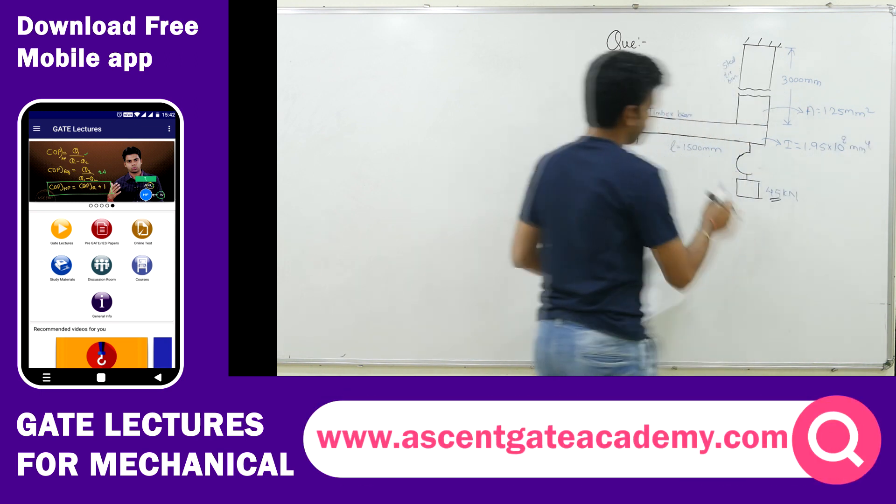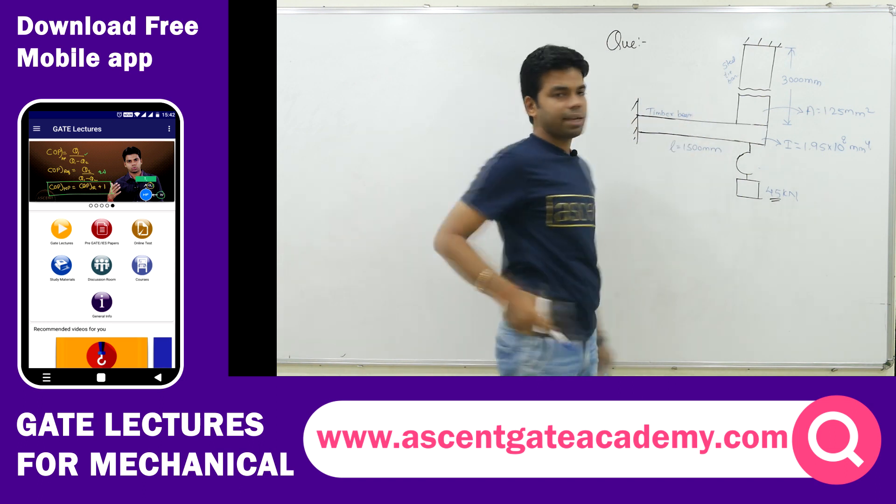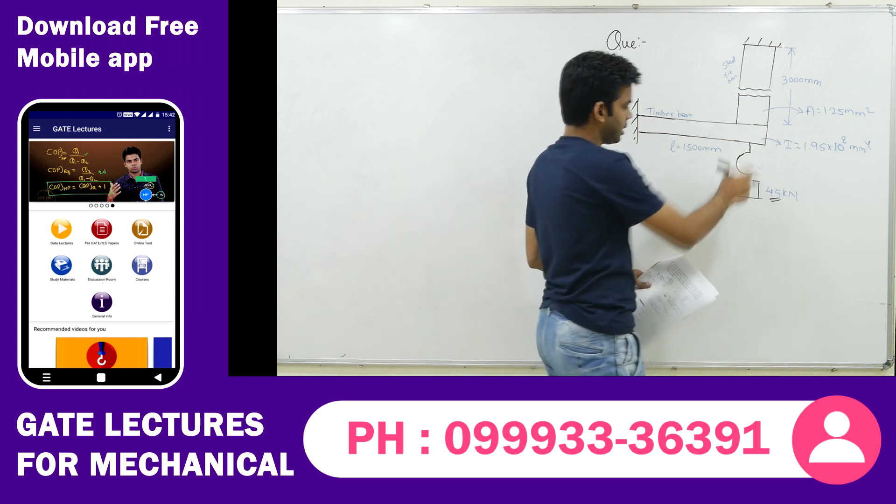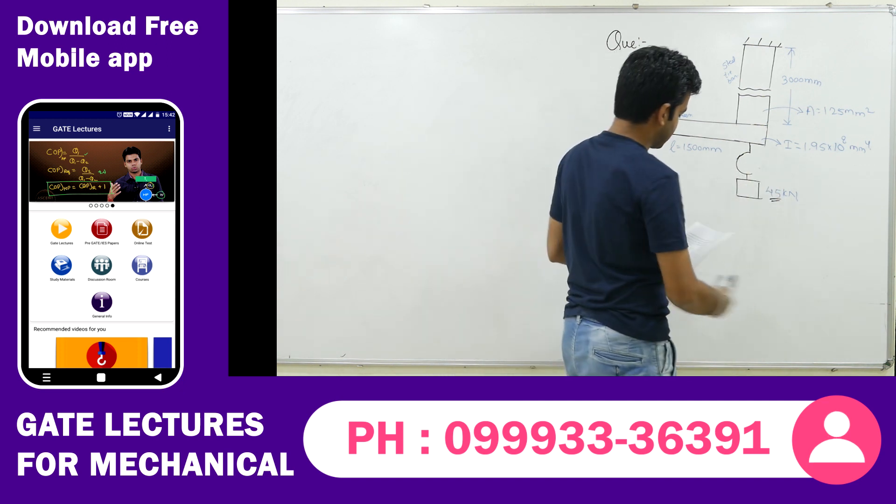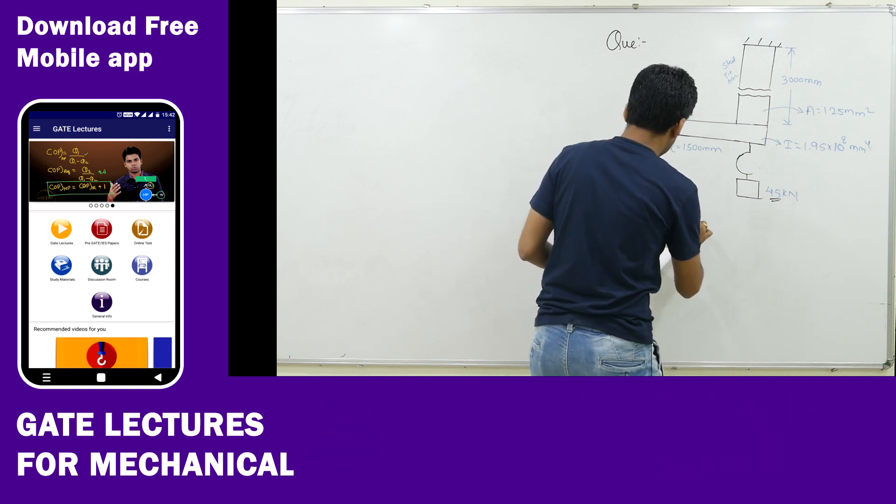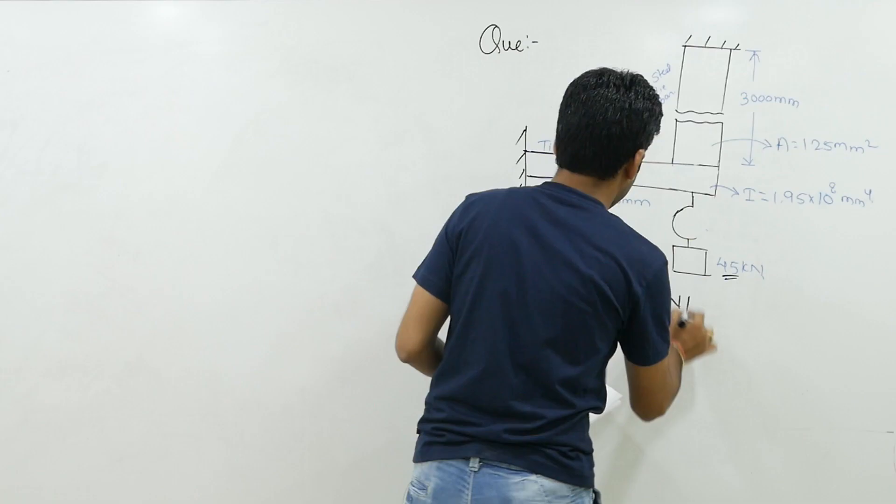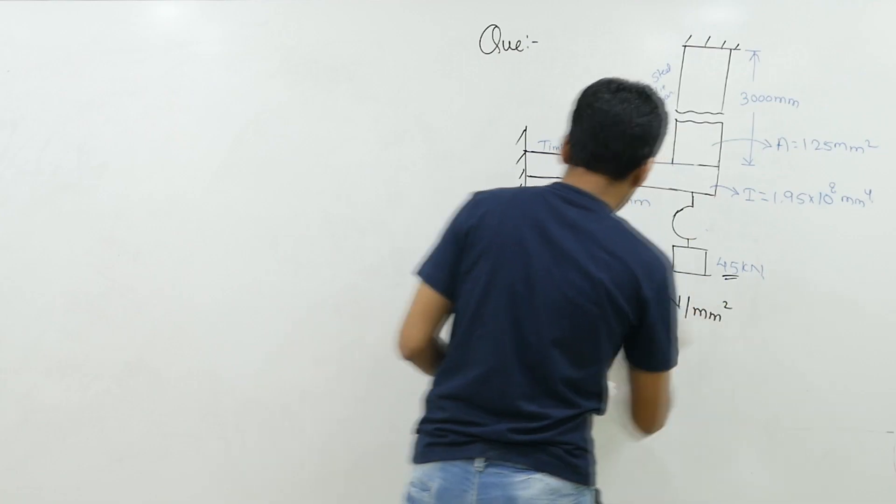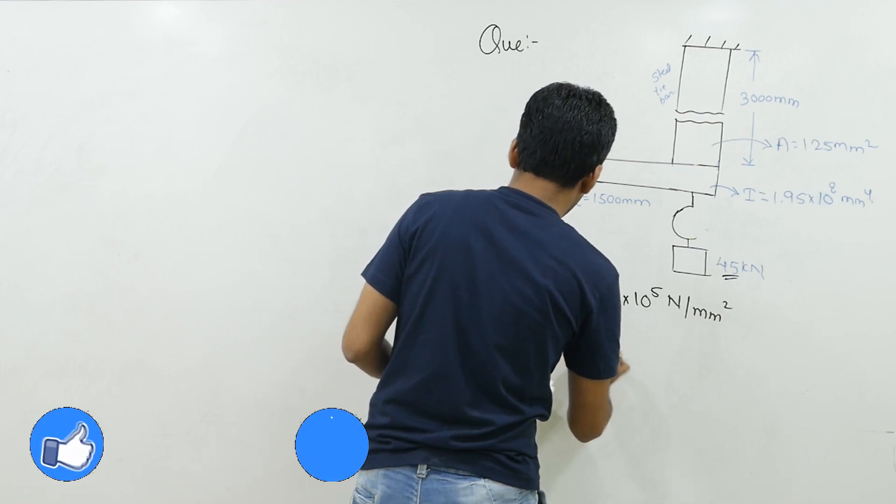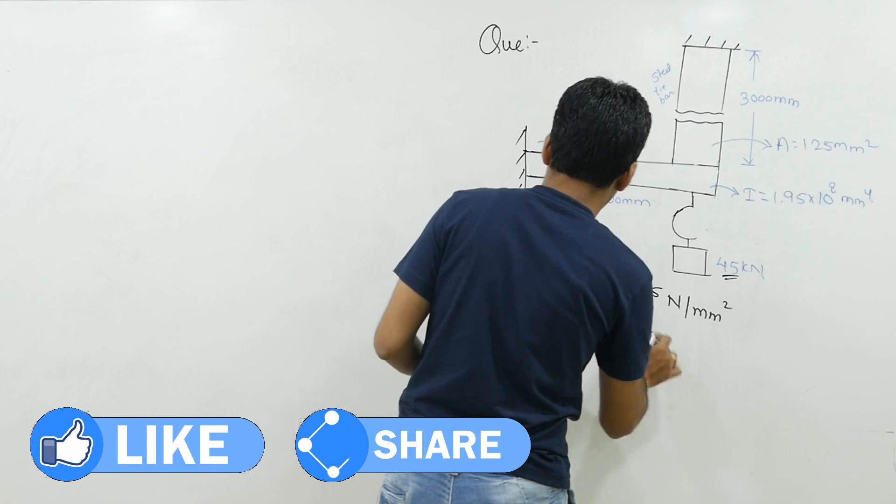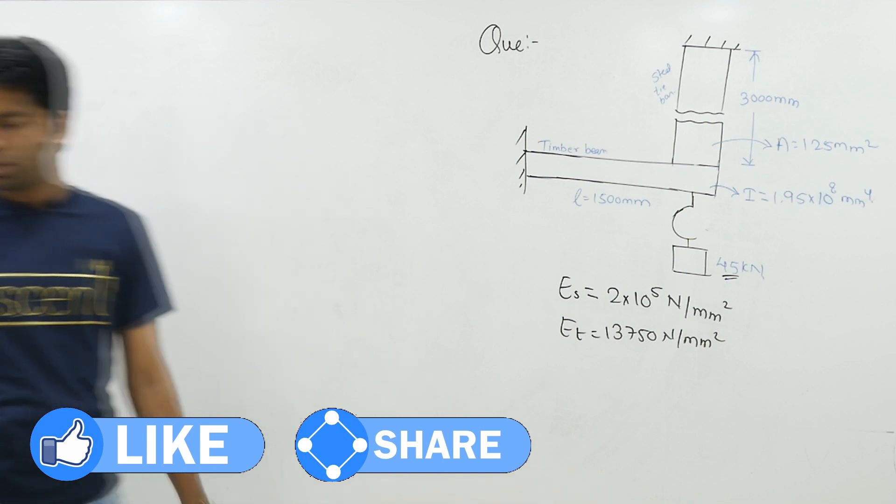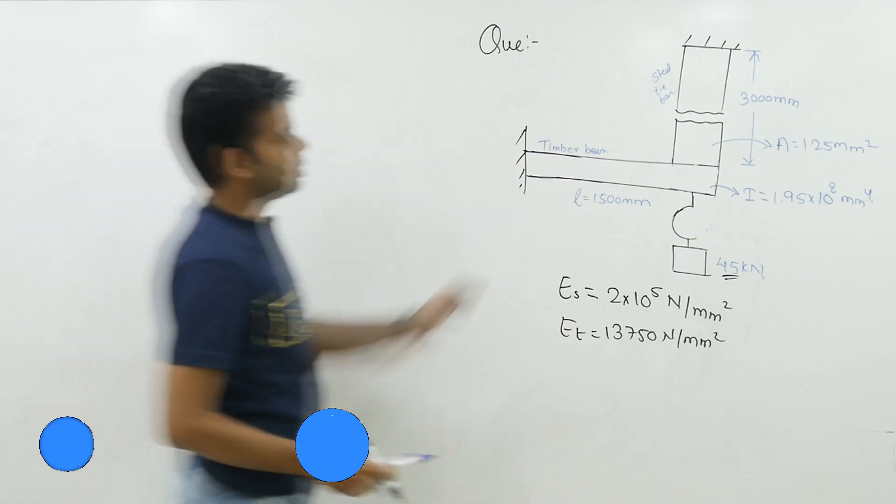We have to find out the axial force acting in the bar, the steel bar axial force. Total weight acting at the section is 45 kN. Modulus of elasticity of steel E is 2 into 10⁵ N/mm². And modulus of elasticity of timber E is 13,750 N/mm². So this is the question given and we have to determine the total axial force which is acting in this steel bar.